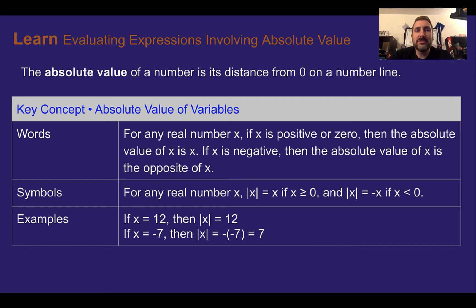The absolute value of a number is its distance from zero on a number line. So for any real number x, if x is positive or zero, then the absolute value of x is x. If x is negative, then the absolute value of x is the opposite of x.